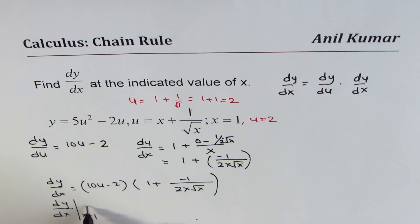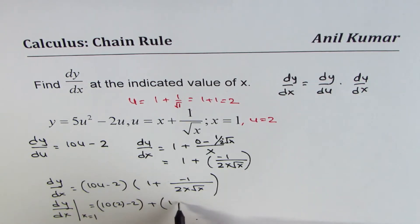So we get dy/dx at x equals 1 is 10 times 2 minus 2 plus 1. We can write minus here, 1 over x is 1, so we get 1 over 2.